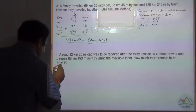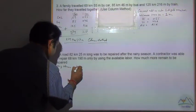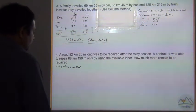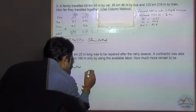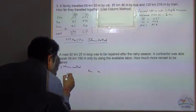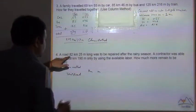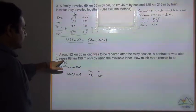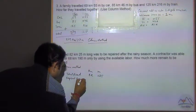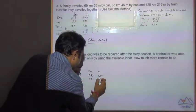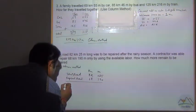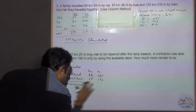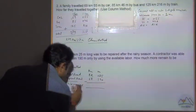Now using column method. Convert all meter into three digit number because 1000 meter is equal to 1 km. So using column method, km and meter. Total road is how much? 82 km and 25, so 25 will be 025. So this is the total length. Repaired road is 68 km and 190 meter. How much more to be repaired? How will you get it? By subtracting. This is more to be repaired.